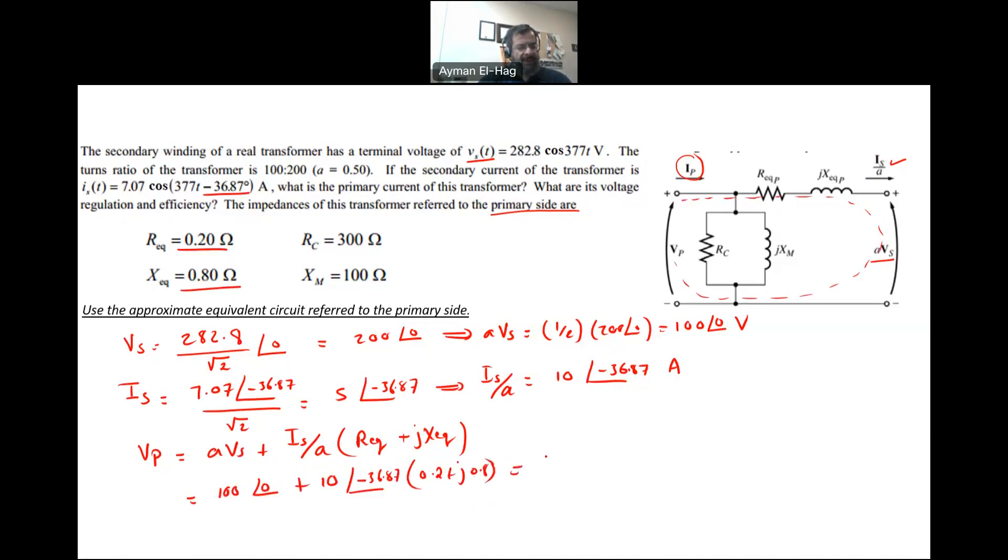My VP is equal to my AVs plus my IS over A times R equivalent plus JX equivalent. Everything here is set to the primary, so I don't need to do any conversion. This is equal to 100 angle of 0 for AVs plus IS over A, 10 angle of minus 36.87 times R equivalent and X equivalent, 0.2 plus J0.8. If we do that, you will find that your VP is equal to 106.5 angle of 2.8 volt. Now, why we need VP? Because we want to find these two currents, IC and IM. Why? Because I want to find IP.